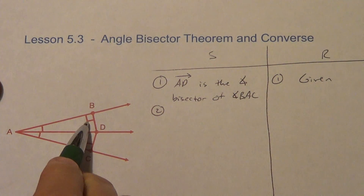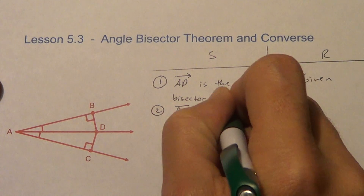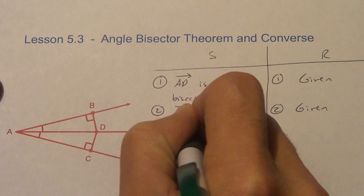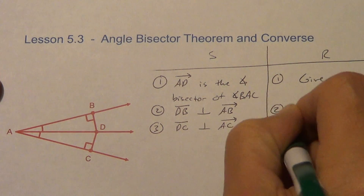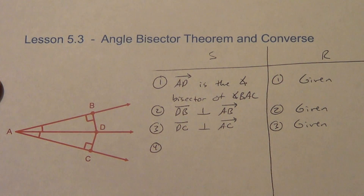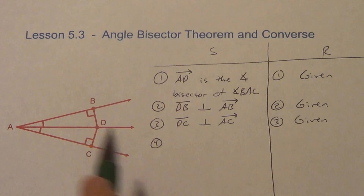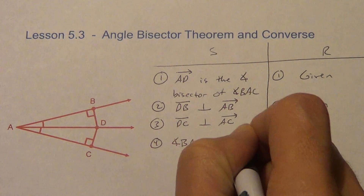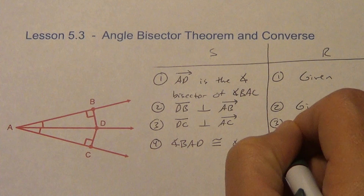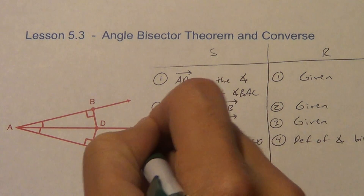There are some other givens here — those little boxes. It tells me that segment DB is perpendicular to ray AB. That's a given. Also, segment DC is perpendicular to ray AC. That's a given. Now, bisect means to cut something in half. So I'm cutting angle BAC in half, giving me angle BAD and angle CAD, which have to be congruent. Reason: definition of an angle bisector.